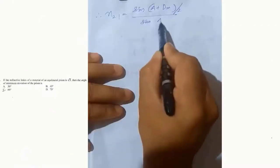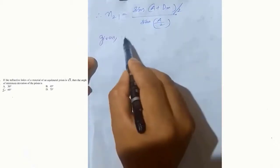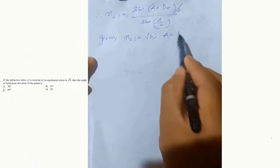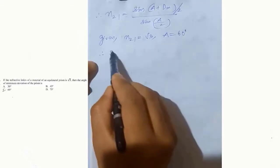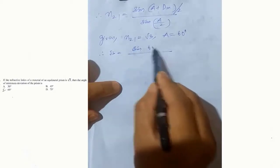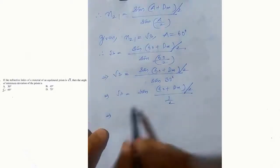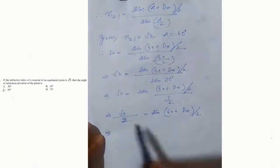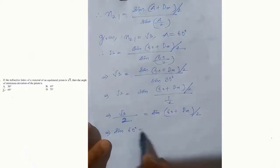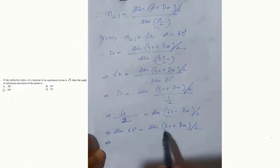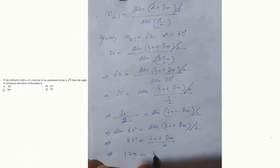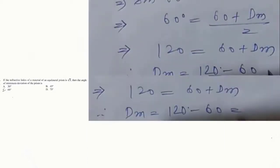Here A is the angle of the prism. Since it is an equilateral prism, A will be 60 degrees. The refractive index is root 3. Using the prism formula: sin((A + D_M)/2) divided by sin(A/2) equals root 3. Now root 3 by 2 is sin 60 degrees. Cross-multiplying, (A + D_M)/2 equals 60 degrees, so A + D_M equals 120 degrees. Therefore, minimum deviation D_M equals 120 minus 60, which equals 60 degrees.